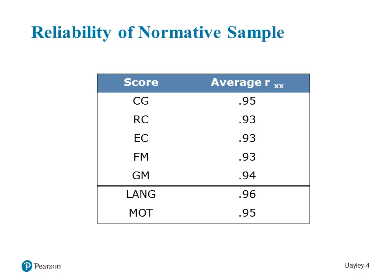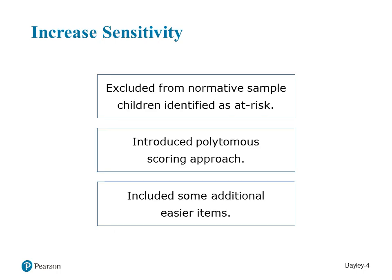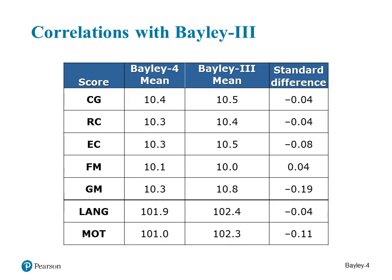In terms of reliability, for the broad scales — cognitive, language, and motor — average reliability is high, in the 0.90s: language 0.96, motor 0.95. Subtest reliability coefficients are also in the 0.90s. To increase sensitivity and correctly identify infants and toddlers with developmental delay, we excluded at-risk children from the normative sample, introduced the polytomous scoring approach, and added easier items to improve the floor of the sections.